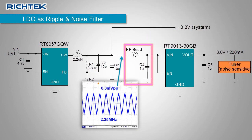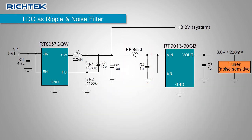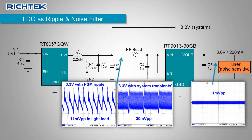Now the LDO output is free of high-frequency components. Lower frequency components, like buck converter PSM ripple or voltage variations due to the 3.3V system load fluctuations, cannot be removed by the high-frequency bead. However, they will be effectively removed by the LDO, thereby ensuring a clean and noise-free tuner supply in all operating conditions.